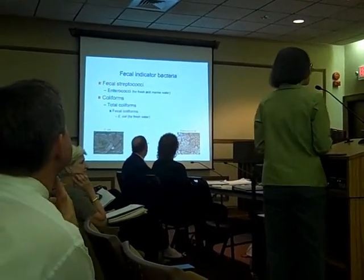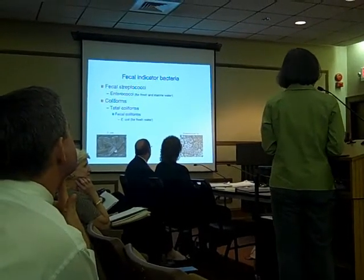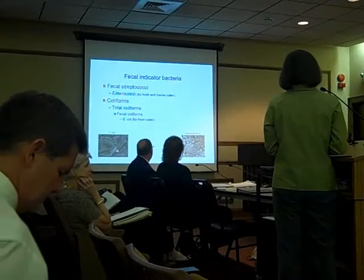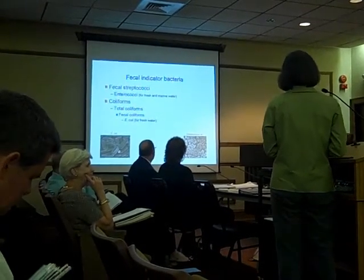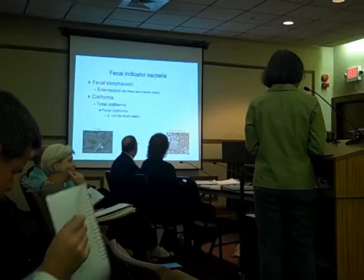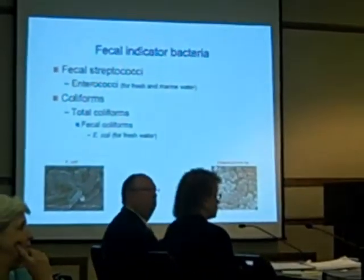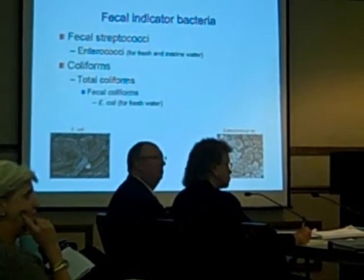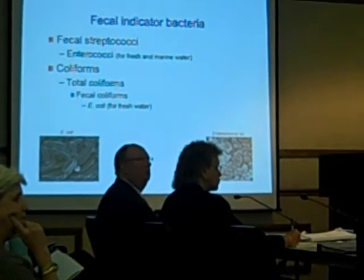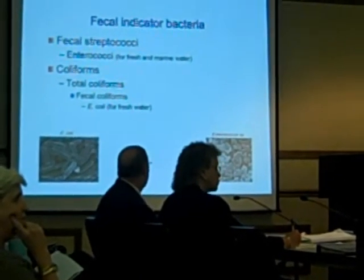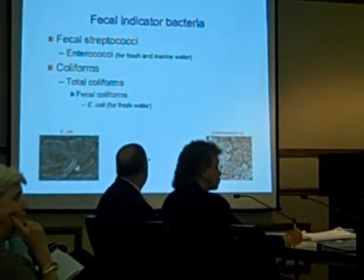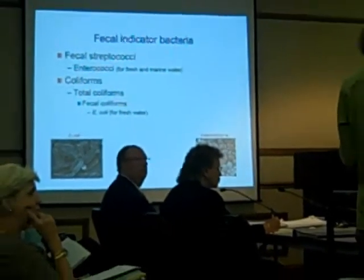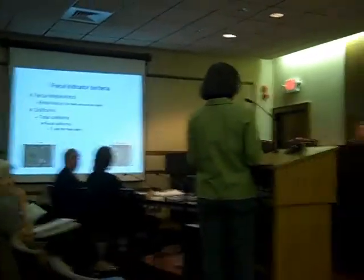We just heard that the city has been monitoring enterococci numbers in the beach water. Enterococci are a group of fecal indicator bacteria. The EPA uses enterococci to monitor both fresh and marine water quality. There are other fecal indicator bacteria, such as E. coli, and they are used as indicator organisms for fresh water only. So when we find high levels of these organisms in the water, we know there's pollution. However, we don't know where they come from — what are the sources.